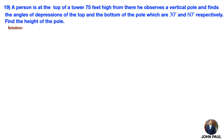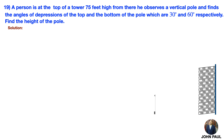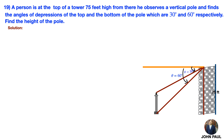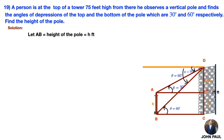A tower is given and a pole is nearby. A person stands on the top of the tower, which is 75 feet high. The angle of depression to the top of the pole is 30 degrees and to the bottom is 60 degrees. Let H be the height of the pole. Drawing a perpendicular line, we get CE equal to H and ED equal to 75 minus H. Let AB equal to H be the height of the pole, and CD be the height of the tower at 75 feet, with BC equal to AE.